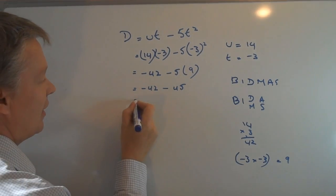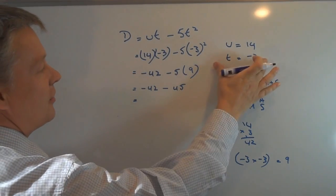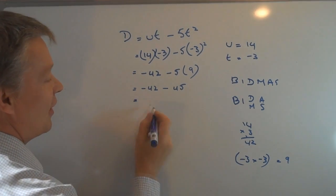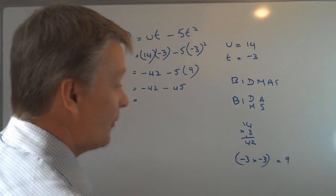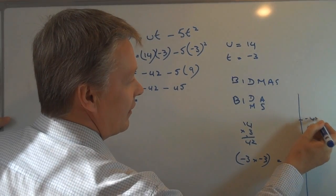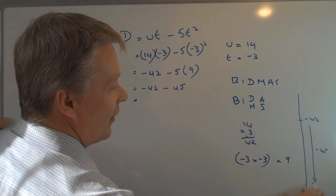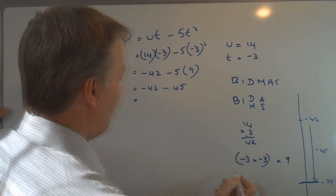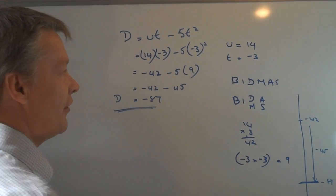So the answer to this particular calculation using these values is going to be d equals minus 42 minus 45. The way I do it is to use a thermometer. So you've got a thermometer here and we've got minus 42 there, and it gets colder by minus 45. So the value at the bottom will be minus 87. So the value of d is minus 87 for this calculation.